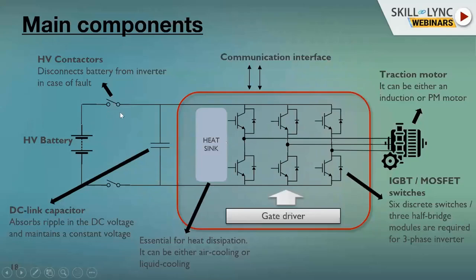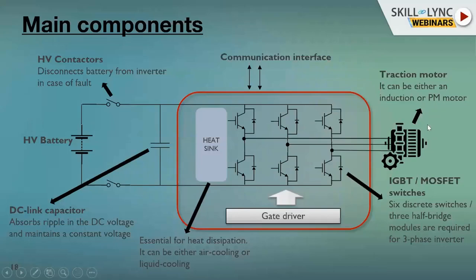In EVs, there are also contactors to disconnect the battery from the rest of the system, though these are external to the inverter. The six switches will be either six discrete switches or three half-bridge modules — a half-bridge module makes one leg of the inverter. Either an IGBT or a MOSFET will be used for that. These make the main power board of the inverter. The six switches or three half-bridge modules constitute the main power board, feeding power to the traction motor. The motor can be of different types — an induction motor or a permanent magnet motor — depending on vehicle requirements.